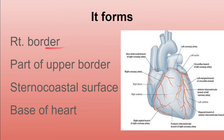The right atrium mainly forms the right border of the heart and part of the upper border. The heart has two main surfaces: the sternocostal surface, which is the anterior surface visible from the outside, and the diaphragmatic surface, which is the inferior surface visible from the posterior view. The right atrium forms the sternocostal surface and also the base of the heart.